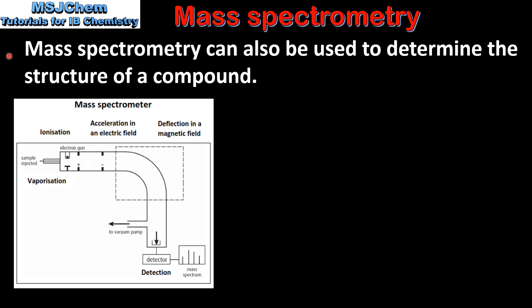Mass spectrometry can also be used to determine the structure of a compound. Here we have a diagram of a mass spectrometer. The stages in a mass spectrometer are vaporization, ionization, acceleration, deflection, and detection.